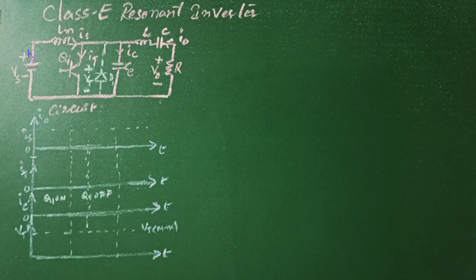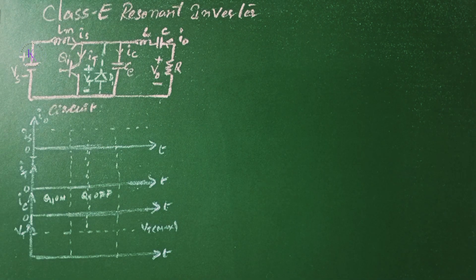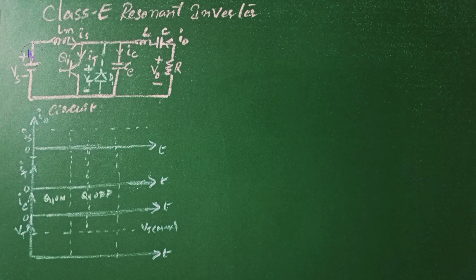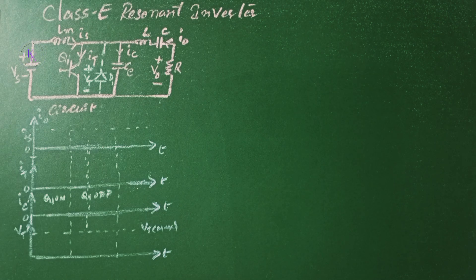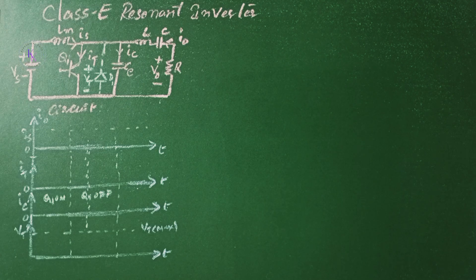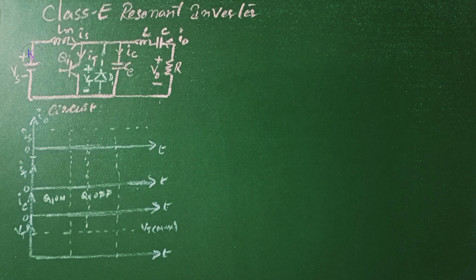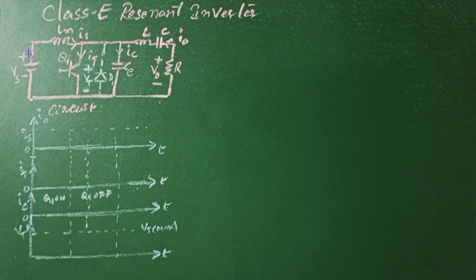Class E Resonant Inverter uses only one transistor and has low switching losses yielding high efficiency of more than 95%. It is normally used for low power applications requiring less than 100 watts, particularly in high frequency electronic lamps. The switching device has to withstand a high voltage.